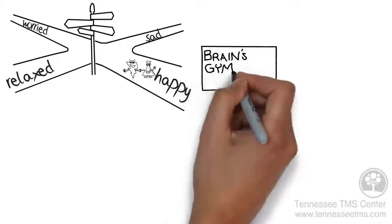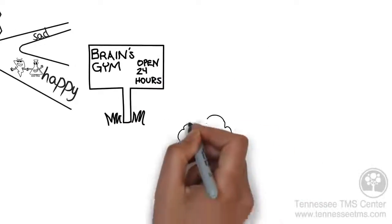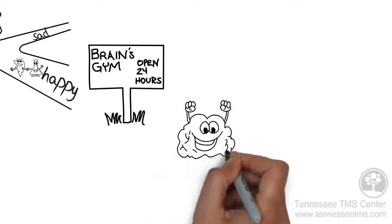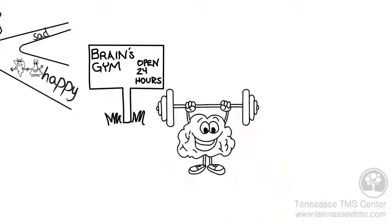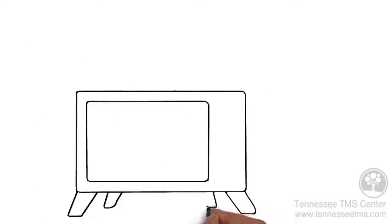The more our brain practices certain pathways, the better it gets at doing whatever it is that we practice. It's kind of like muscle memory, but for the neurons in our brain. Now, let's focus on how this translates in depression.